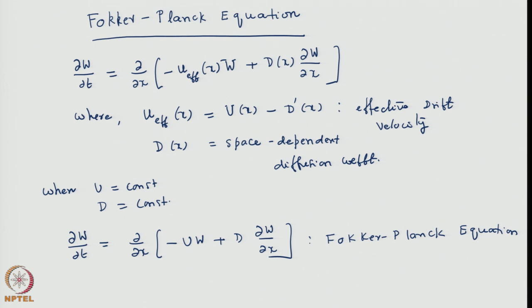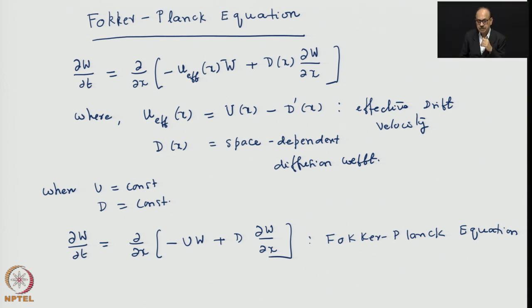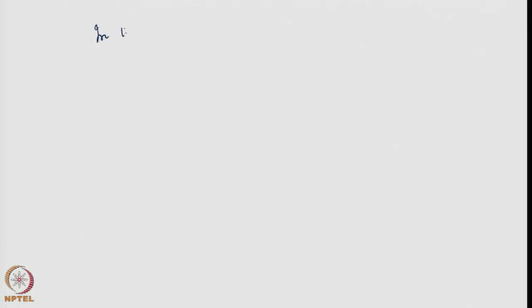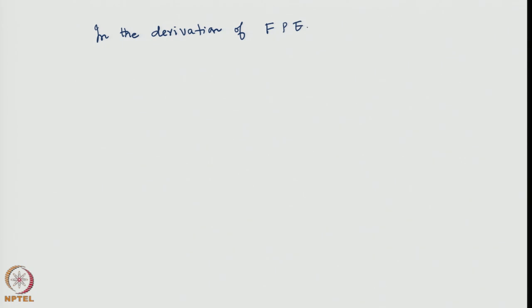What were the assumptions we made when we arrived at this equation? Basically, in the derivation of the Fokker-Planck equation, the following assumptions were made regarding the transition probability.